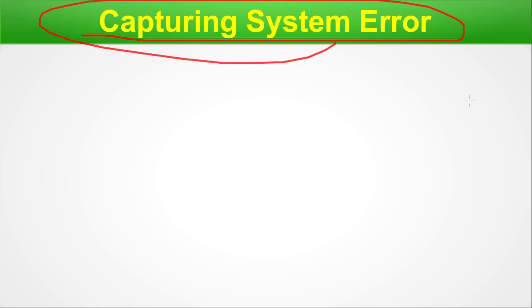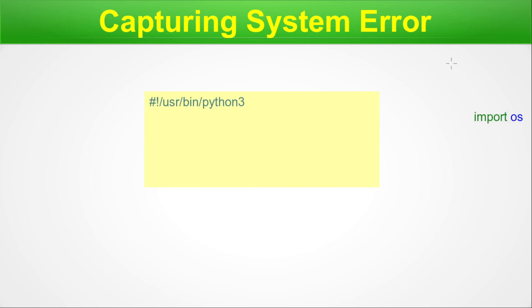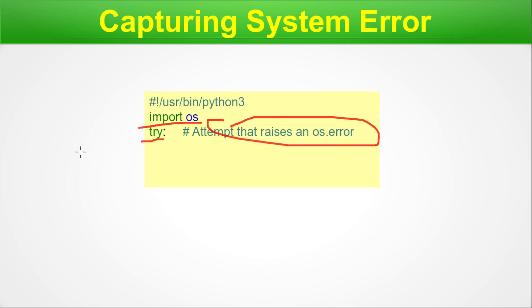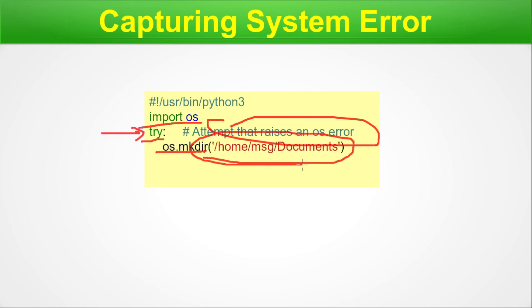Capturing system errors — this is very important in VLSI EDA automation. At step one you run tool one, take its output, and pass it to tool two. You need to check whether the first tool gave an error or not. The method uses the try/except pattern. We attempt to raise an error by using os.mkdir() on a path — like /home/username/Documents — that we know already exists.